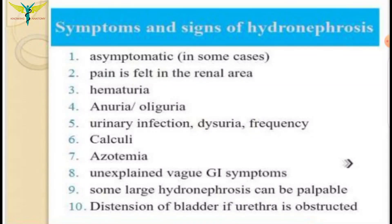Hydronephrosis is asymptomatic in some cases. Pain may be felt in the renal area, hematuria may be present, anuria or oliguria, urinary infections, dysuria, and frequency of urination may occur. Calculi may be present, azotemia is present, and unexplained vague gastrointestinal symptoms may appear. Some large hydronephroses can be palpable due to the large distended size, and distension of the bladder if the ureter is obstructed may also be seen.